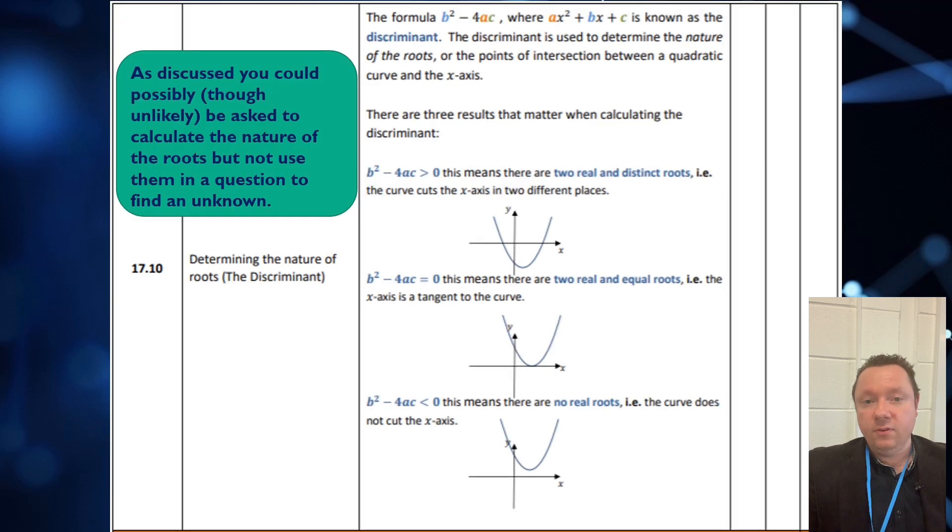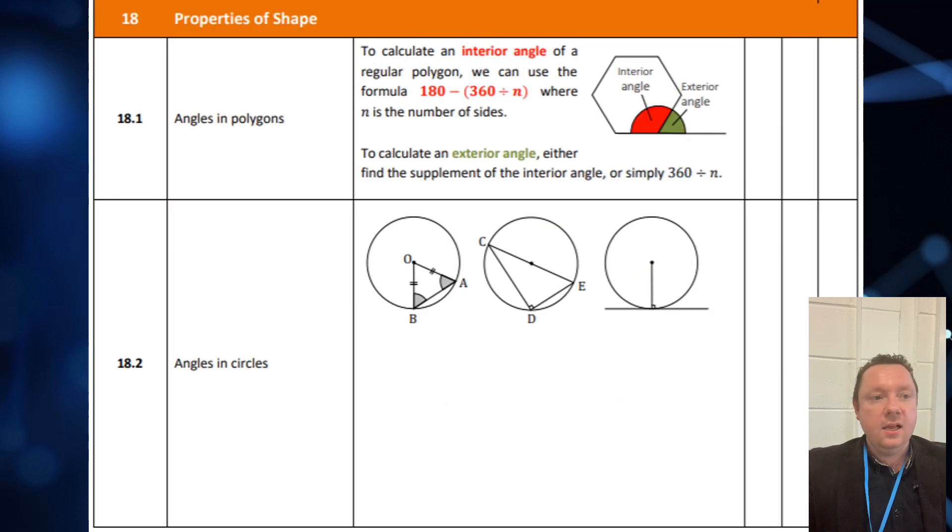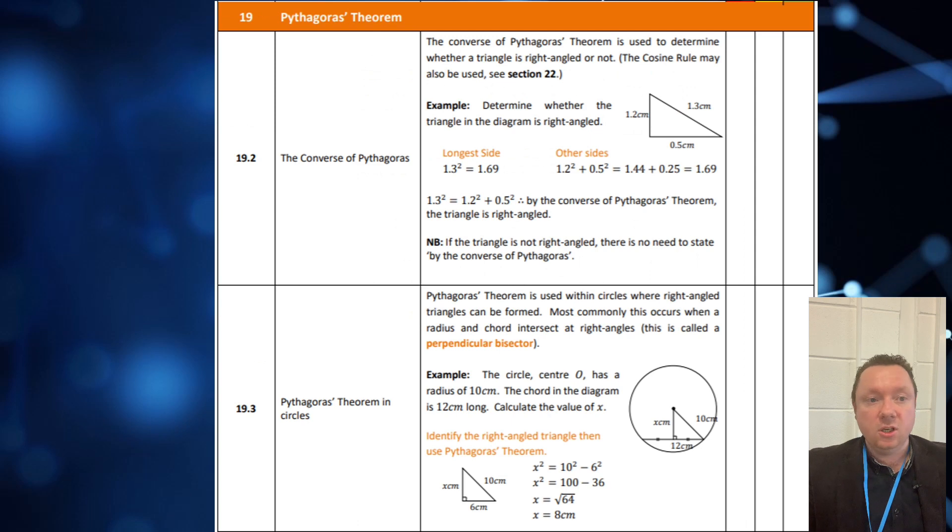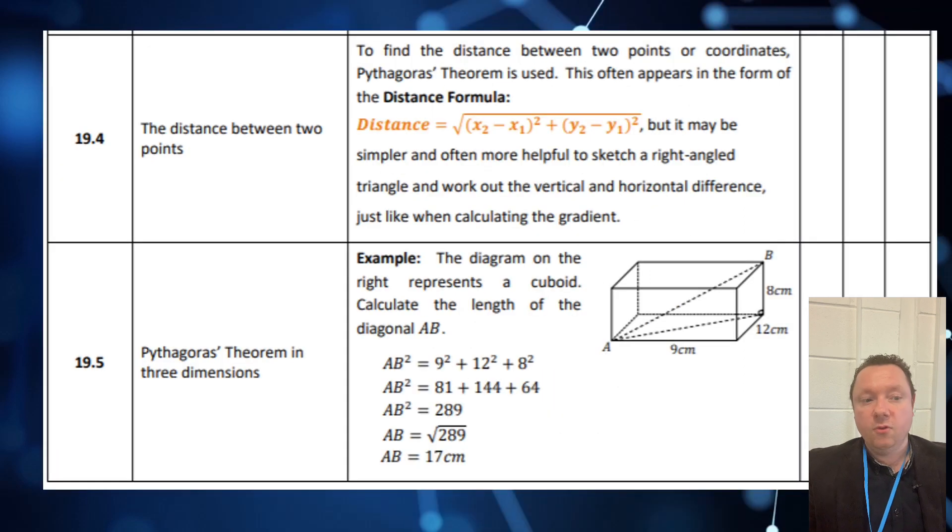As discussed, for the next one, nature of the roots probably out, though here is what may be in, if it is in at all. Angles in polygons and circles is in. Converse of Pythagoras, Pythagoras's theorem in circles is in. Using the distance formula, working with Pythagoras in three dimensions.